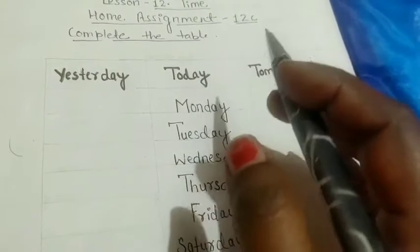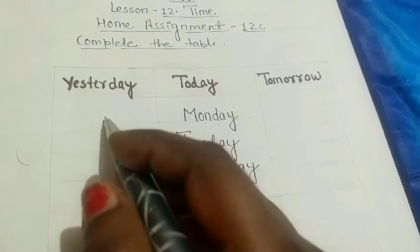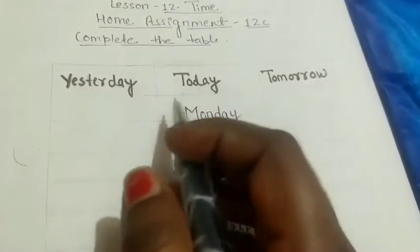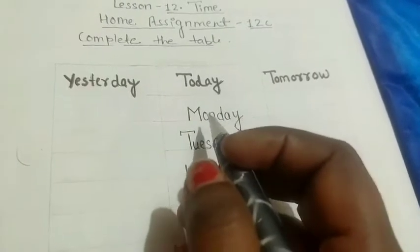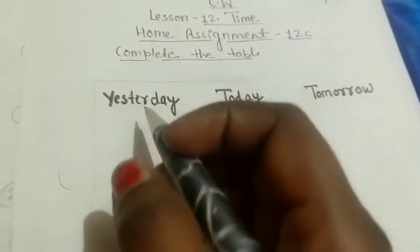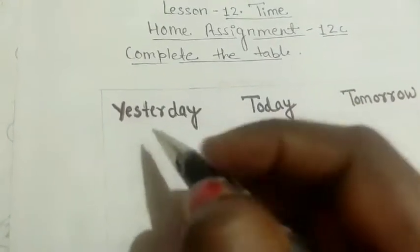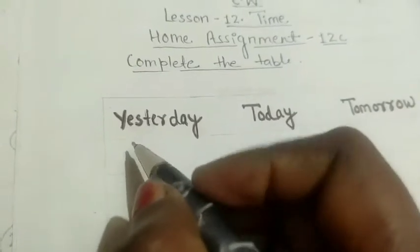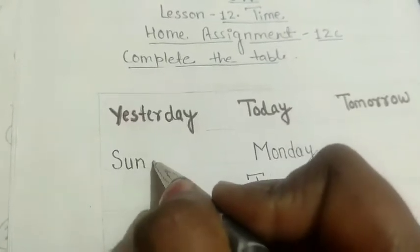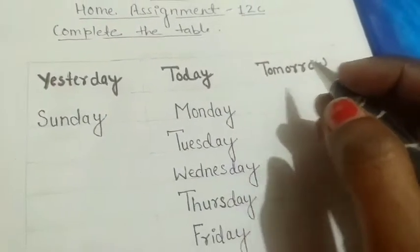Today is Monday, so yesterday was Sunday. The day before today is known as yesterday. On Monday we say yesterday was Sunday. Write it here: Sunday.